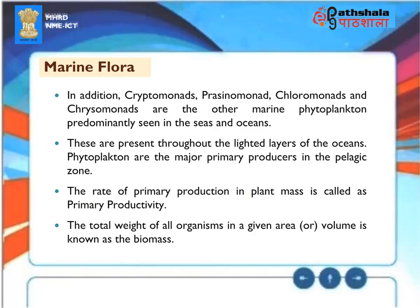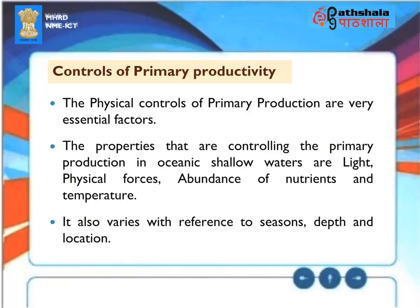These phytoplanktons are present throughout the lighted layers of the oceans and are the major primary producers in the pelagic zone. The rate of primary production in plant mass is called primary productivity. The total weight of all organisms in a given area or volume is known as the biomass. The physical controls of primary production are very essential factors — the properties controlling primary production in oceanic shallow waters are light, physical forces, abundance of nutrients, and temperature. It also varies with reference to seasons, depth, and location.